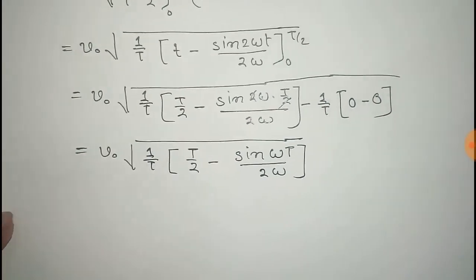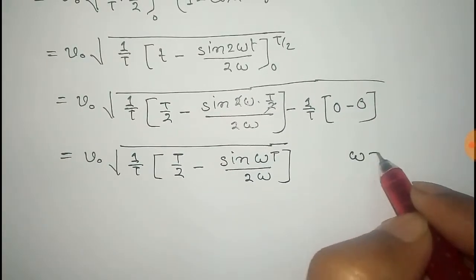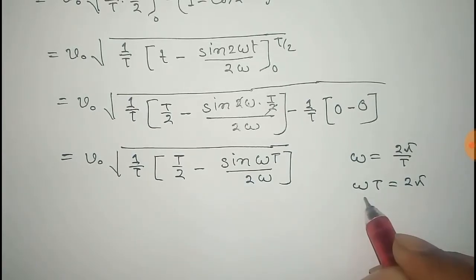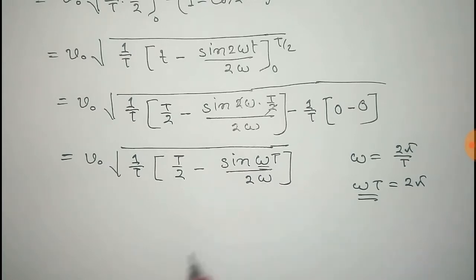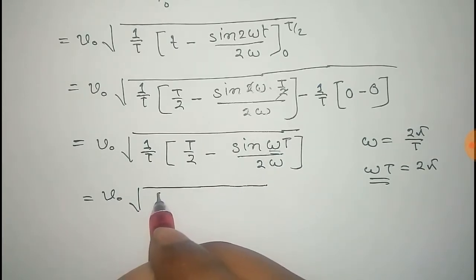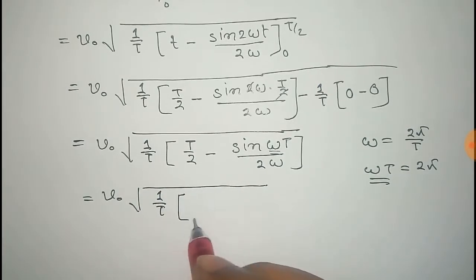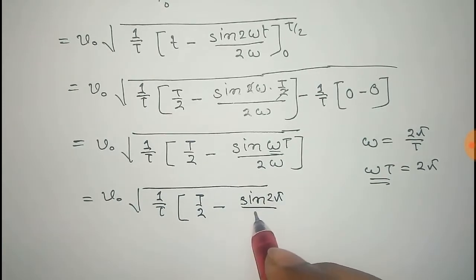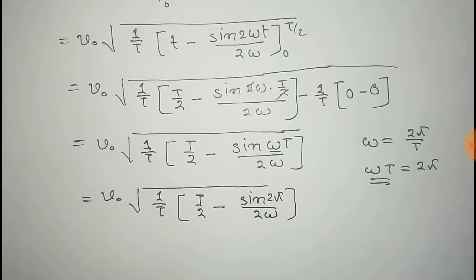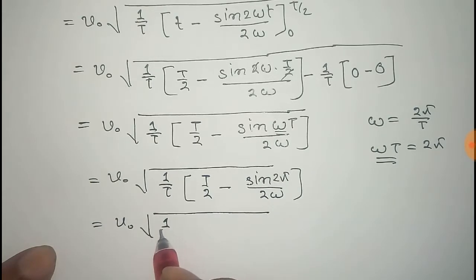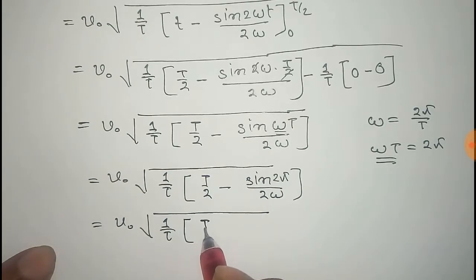We know that angular frequency ω equals 2π/T, so ωT equals 2π. Substituting, we get V₀ times square root of (1/T) times [T/2 − sin(2π) / (2ω)]. Since sin(2π) equals 0, this simplifies to V₀ times square root of (1/T × T/2).